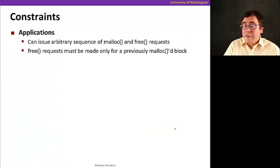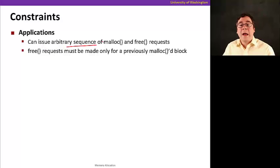That's what kind of constraints allocators have. So first, from the application point of view, it can issue an arbitrary sequence of mallocs and free requests. And free requests must be made only to a previous malloc block. I've said this two or three times already because it's actually really important.